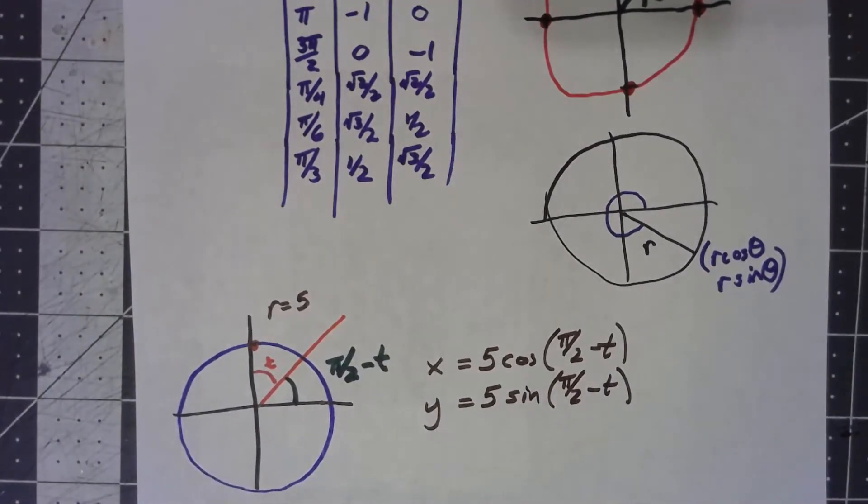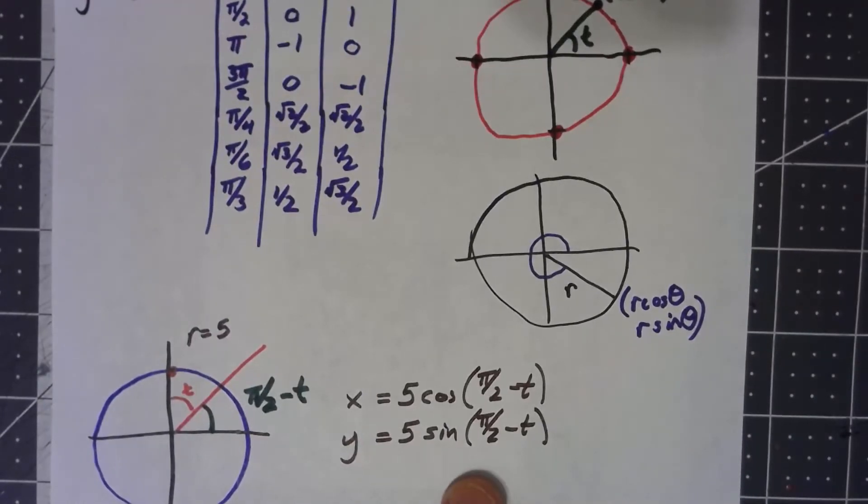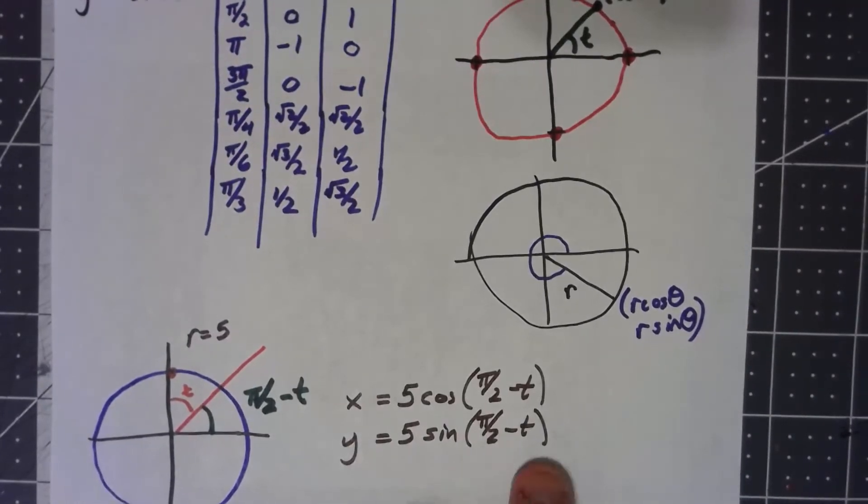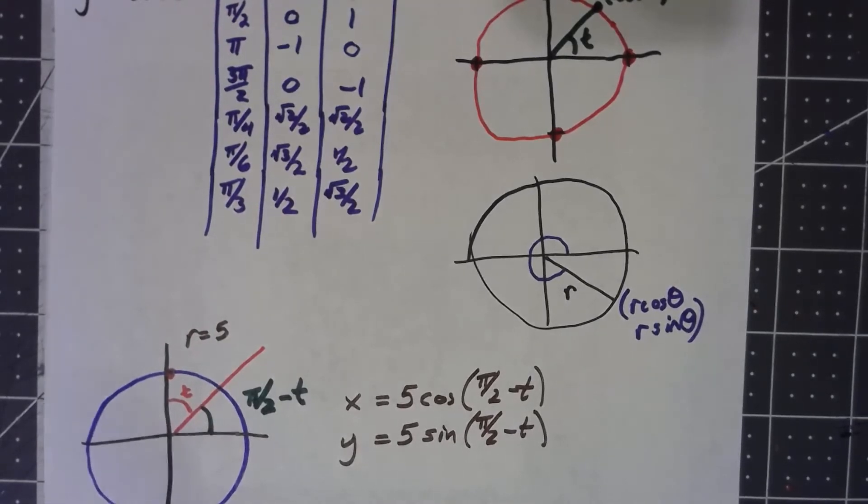Now, if you want to, you can actually simplify this a little bit. You can take this and start saying, well, we've got a difference of two angles. You can use your trig identity for the sine and cosine of a difference of two angles. And the cosine and the sine of pi over 2 are nice, easy values. And so it would simplify down fairly nicely.